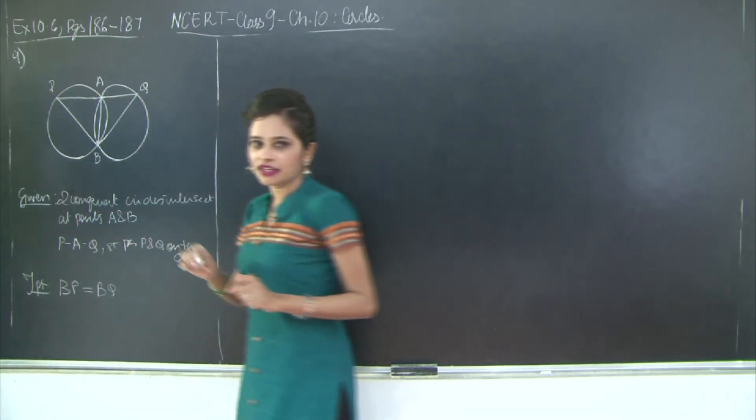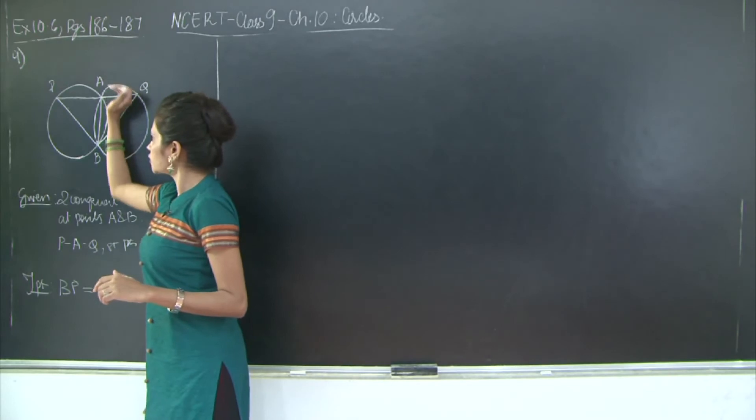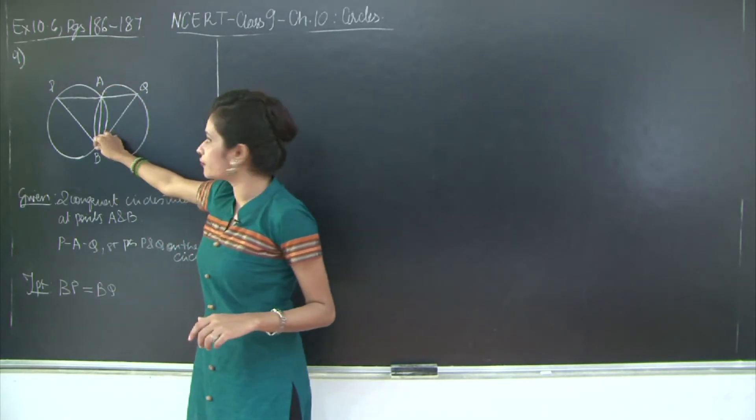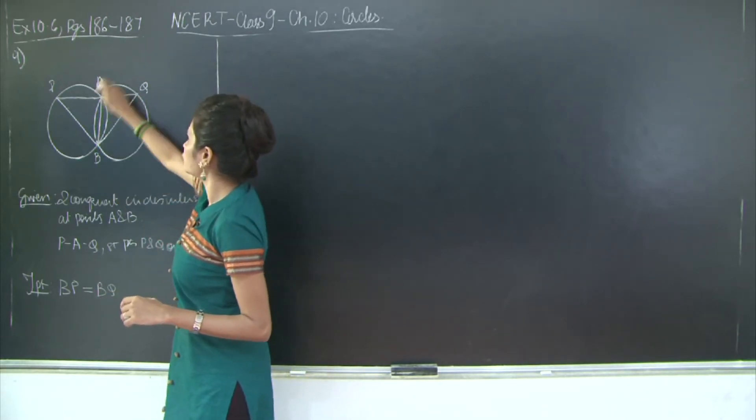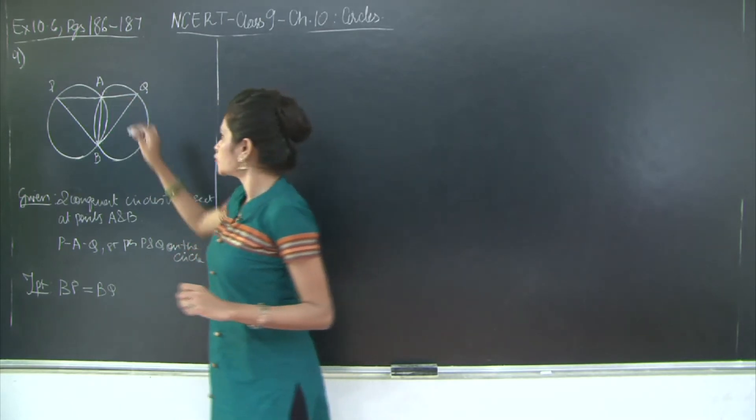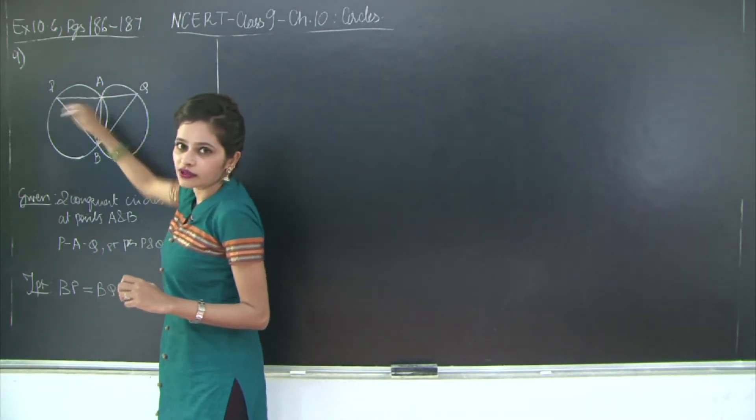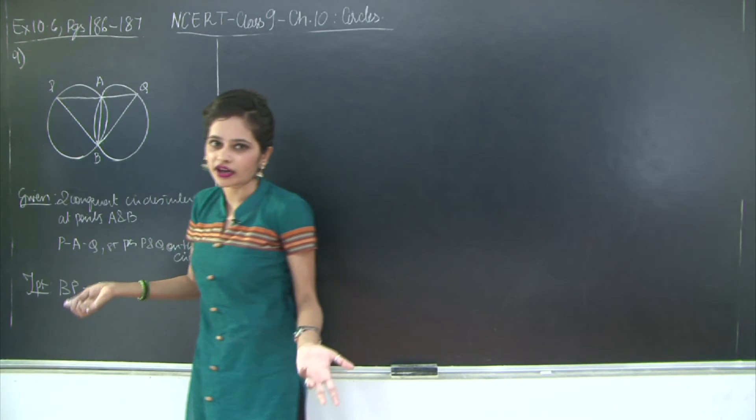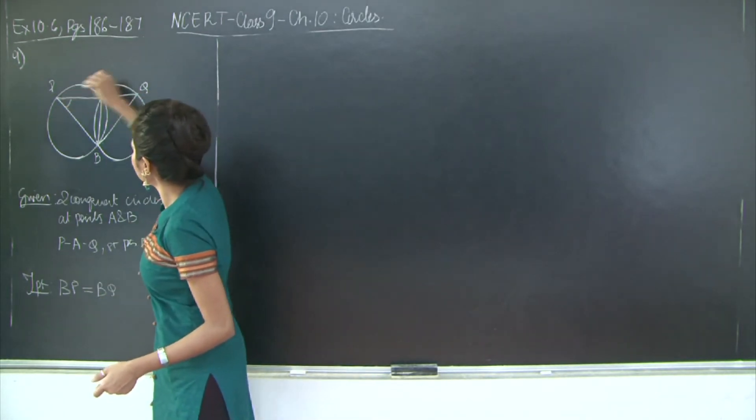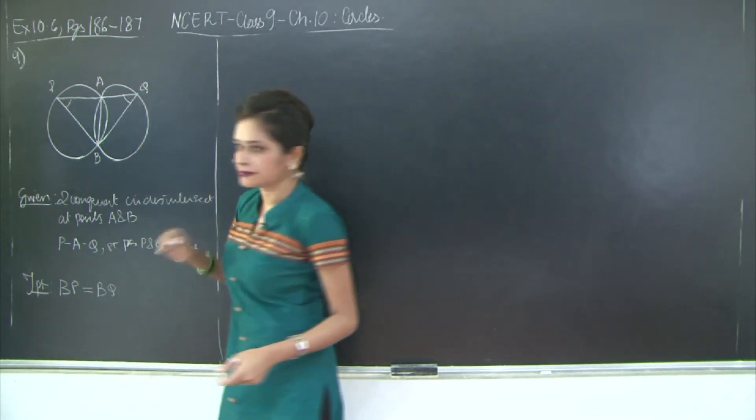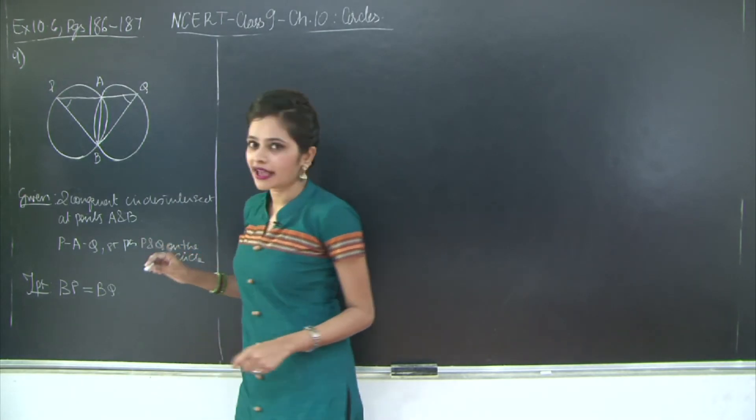So when you join AB and if you take a look at the first circle, you will notice that AB is the chord for this circle and AB is the chord for this circle as well. So now this chord is equal for both the circles because it's the same one. Therefore it's going to subtend equal angles at the circumference of the circle.